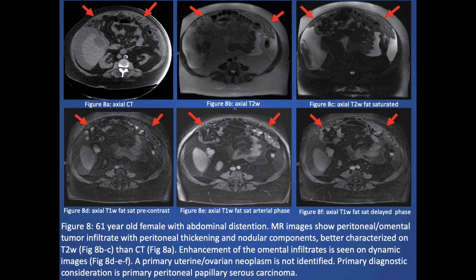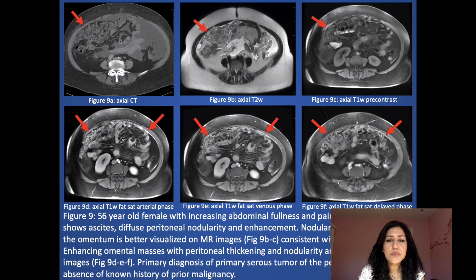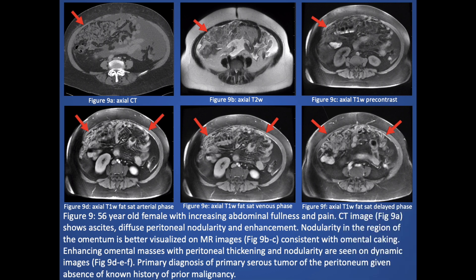Here is a 61-year-old female with abdominal distension. Images show peritoneal and omental tumor infiltrate with peritoneal thickening and a nodular component. A primary ovarian neoplasm was not identified, and the primary diagnostic consideration is primary peritoneal serous carcinoma. Another case: a 56-year-old female with increasing abdominal fullness. CT shows ascites and diffuse peritoneal nodularity, better characterized on MR with omental caking, enhancing omental masses, and peritoneal thickening. Primary serous tumor is favored given no prior history of malignancy.